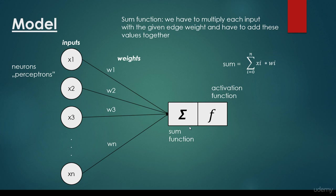Then what about the sum function? The sum function is going to multiply each input with the given edge weight, and we have to add these values together. So the sum function does something like this: it is going to be a sum, and we have to sum up x sub i times w sub i — so x1 times w1, plus x2 times w2, and so on. We have to sum up the input values multiplied by the edge weights.